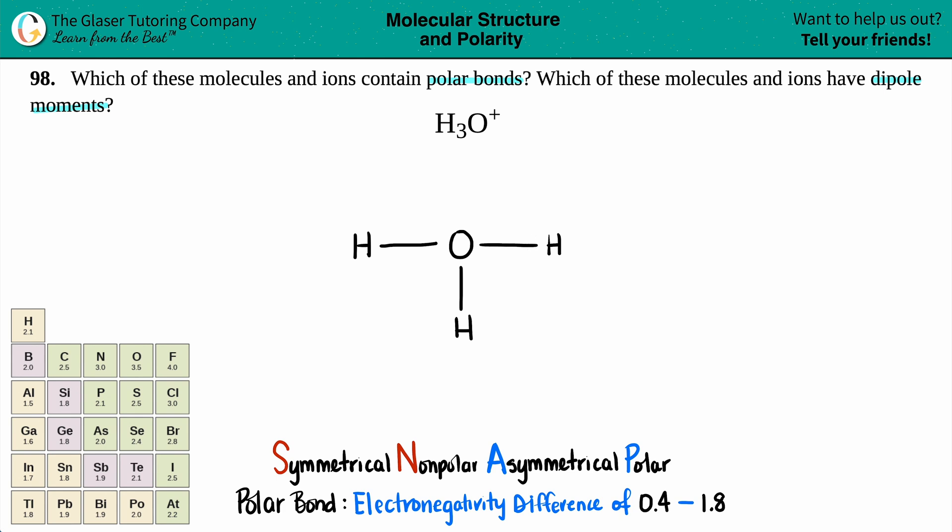And then to fill out that octet, that oxygen needs two electrons. And since it's a positive, this is an ion. An ion is always a charged species. So I'm just going to put the brackets around it and say that this is positive. Now here is the Lewis structure.